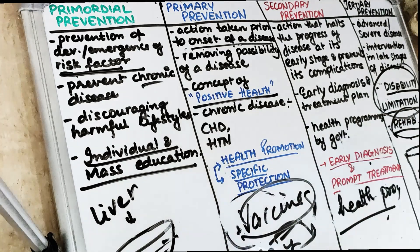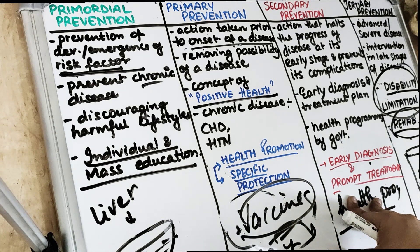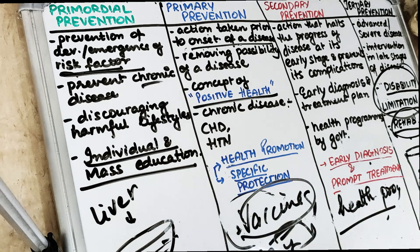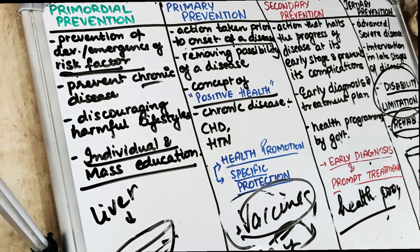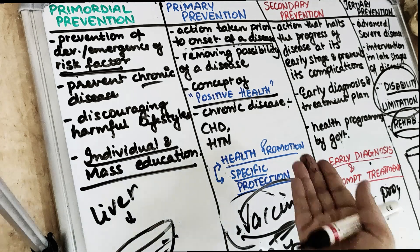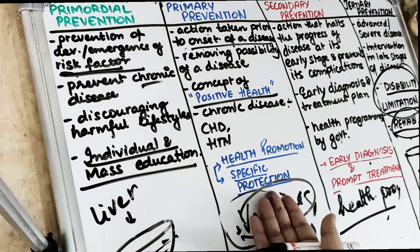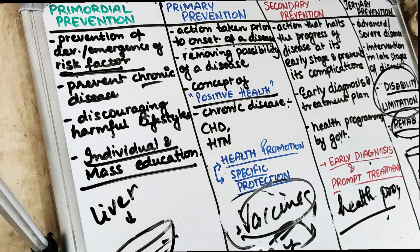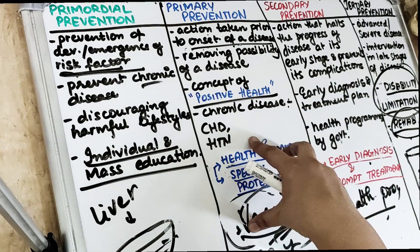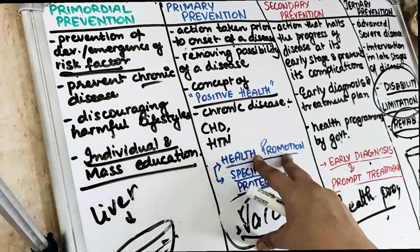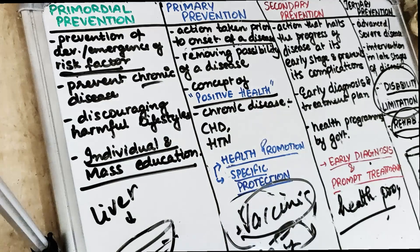Scaling and root curettage comes under the secondary level of prevention, as do preventive resin restorations and simple restorative procedures like filling. Primary level of prevention includes health education, health promotion, and specific protection such as pit and fissure sealants, caries activity tests, and all forms of fluoride given to children to prevent caries.